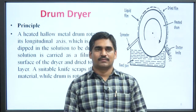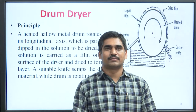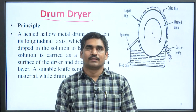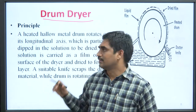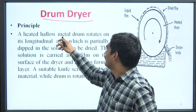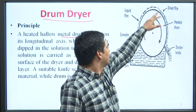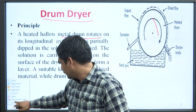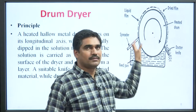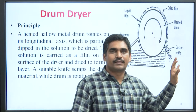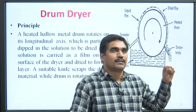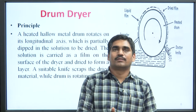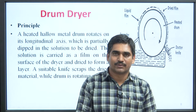The next dryer to be discussed is the drum dryer. The principle behind the drum dryer is a heated hollow metal drum. This metallic hollow drum is heated and rotates on its longitudinal axis.